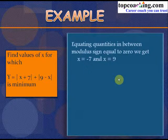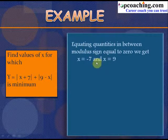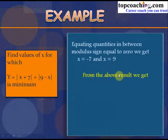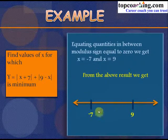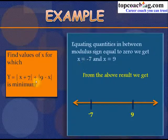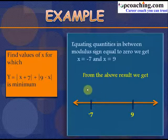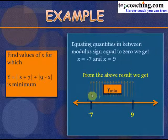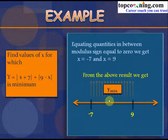For all values of x between −7 and 9, we get the minimum value of y, and this value is also constant. For example, at x = 0: y = 7 + 9 = 16. At x = 1: y = 8 + 8 = 16.